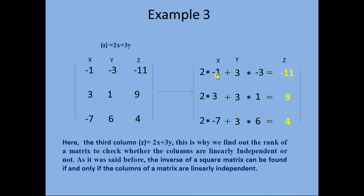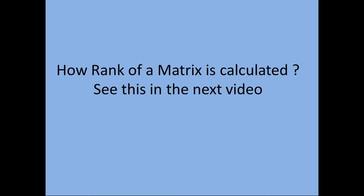Likewise, all the elements of the third column z have been found in this way. This is why we find the rank of a matrix — to check whether the columns are linearly independent or not. As stated before, the inverse of a square matrix can be found if and only if the columns are linearly independent; otherwise we cannot find the inverse. To find the inverse you need to know the rank of a matrix. How the rank of a matrix is calculated will be shown in the next video.